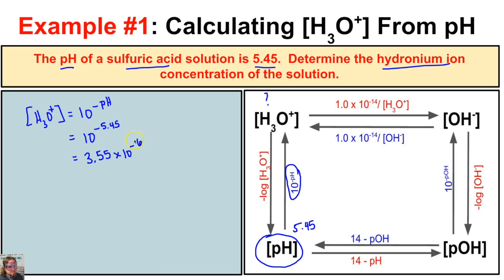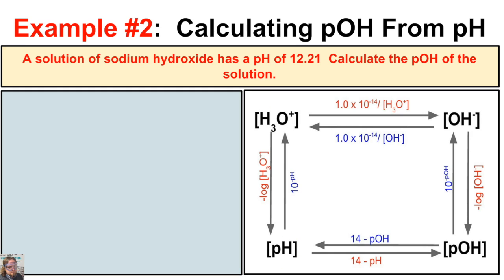Don't forget our units — whenever we're dealing with concentrations of acids and bases, it's typically going to be molar or moles per liter. So if we have a sulfuric acid solution with a pH of 5.45, the concentration of hydronium ions in that solution is 3.55 times 10 to the negative 6 moles per liter.